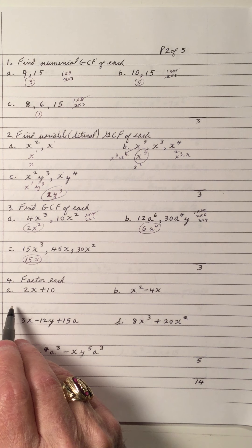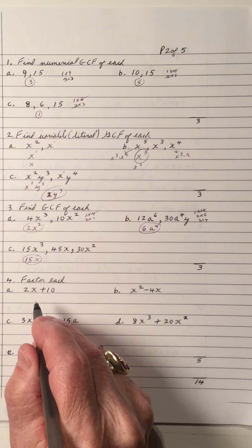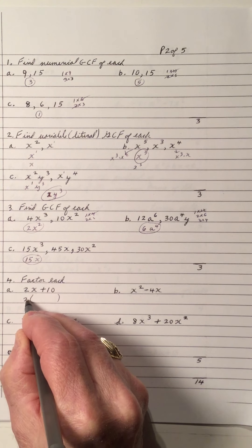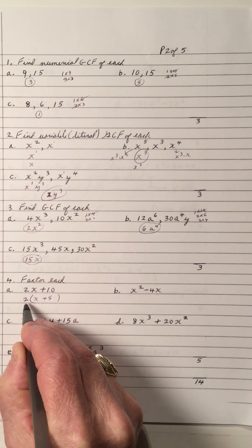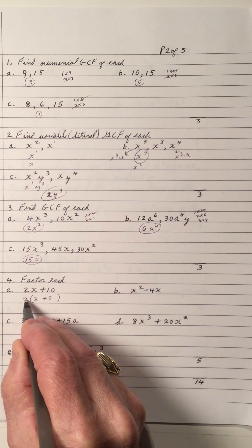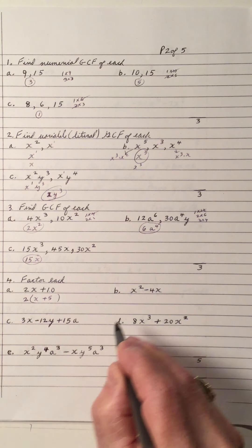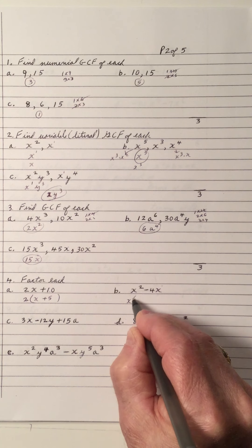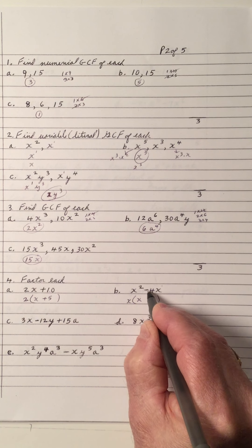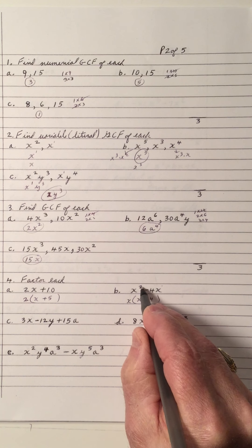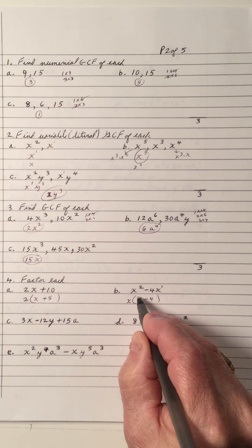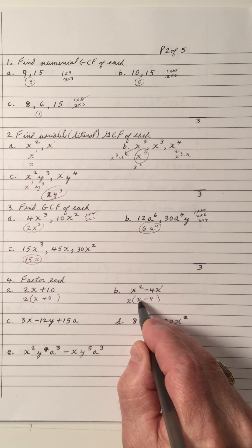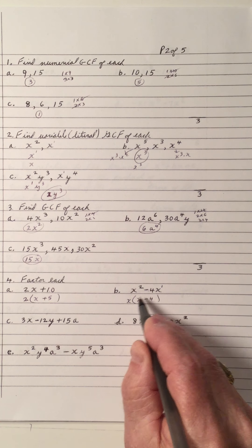Now let's factor each — factor means to express as a product. First rule is to look for the GCF. Take out two: 2x divided by 2 is x, 10 divided by 2 is 5, giving 2(x + 5). Check by multiplying back. For the next one, GCF is x numerically one; x squared divided by x is x, negative 4x divided by x is negative four, giving x(x − 4). Notice the degrees go from two to one inside — one and a constant. Multiply back to verify: x times x is x squared, x times negative four is negative four x.